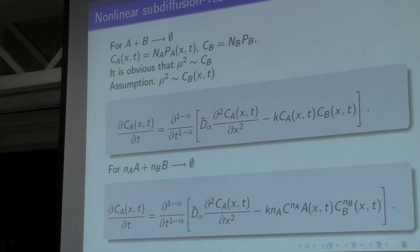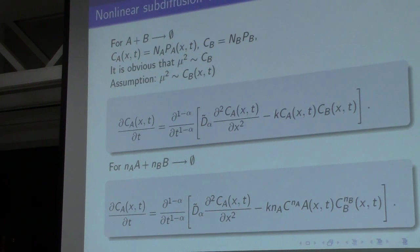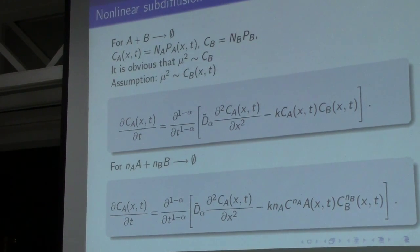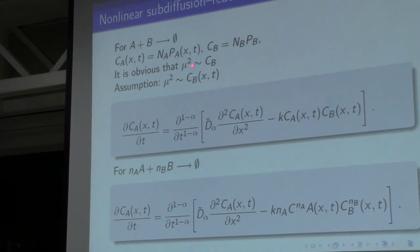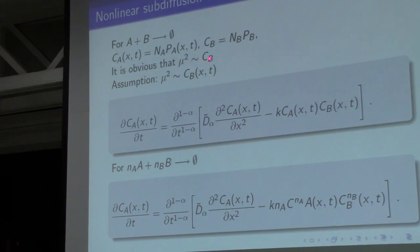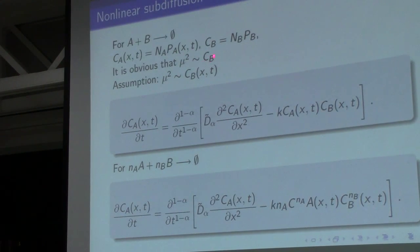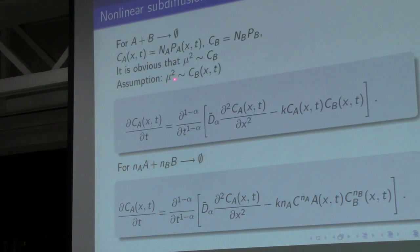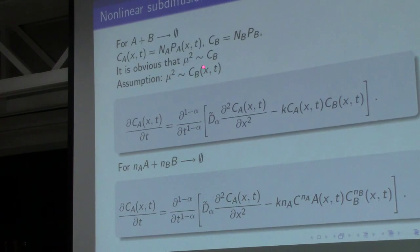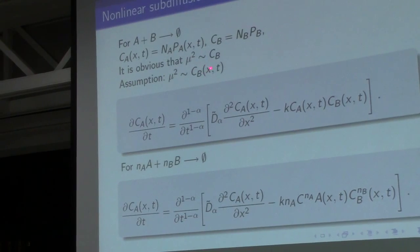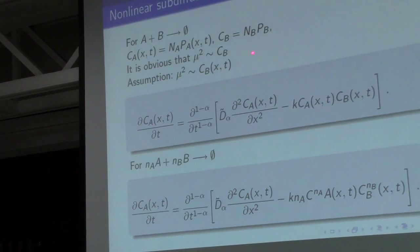We are able to generalize the equation to the non-linear case, assuming naturally that the reaction rate is proportional to the concentration of B particles. The standard assumption is that this relation is valid also for the case in which the concentration is a function of x and t.